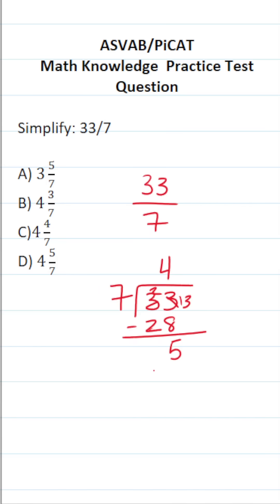And just like that, we have enough information to write our mixed number. This 4 is going to be our whole number. This remainder of 5 is going to be our numerator.